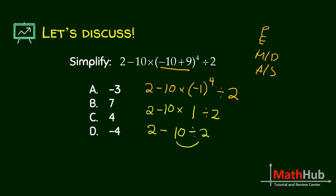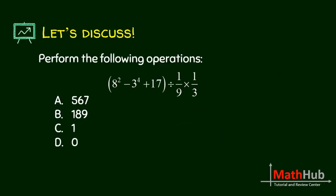And lastly, 10 divided by 2 is 5. 2 minus 5, the answer is negative 3.